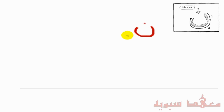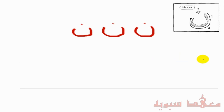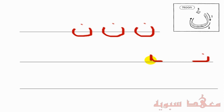So let's write it. The beginning of the word form is as follows — it's exactly the same as a Ta, Tha, and a Ba, except the dot is on top. In the medial form it's the same: you go up and then wait for the next letter.